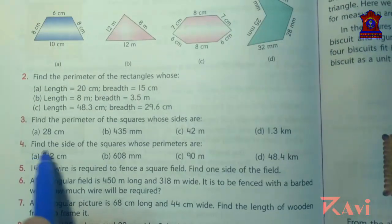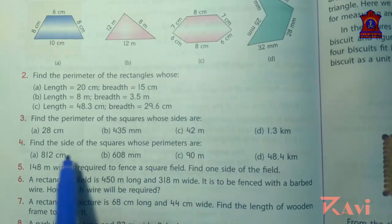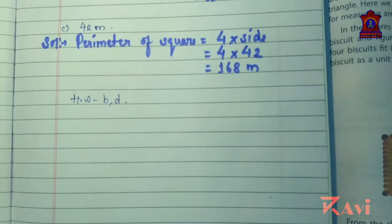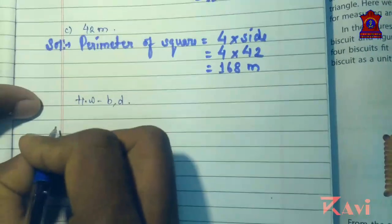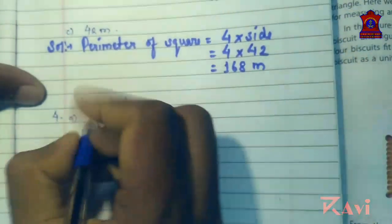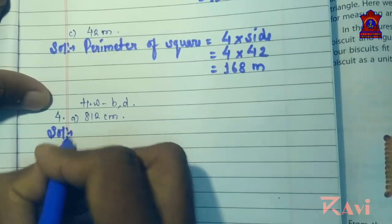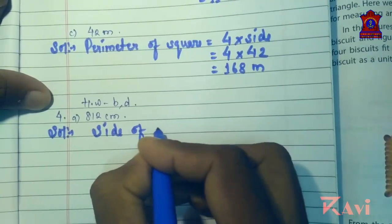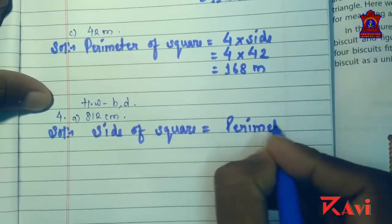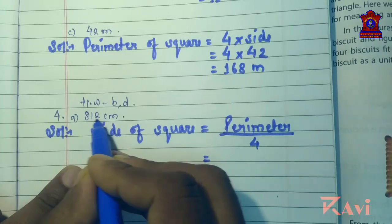Now let's move to question number 4: find the side of the squares whose perimeters are given. Here we need to find the side since the perimeter is already given. For question 4A, the perimeter is 812 centimeters. The formula is: side of square equals perimeter divided by 4, so 812 divided by 4.